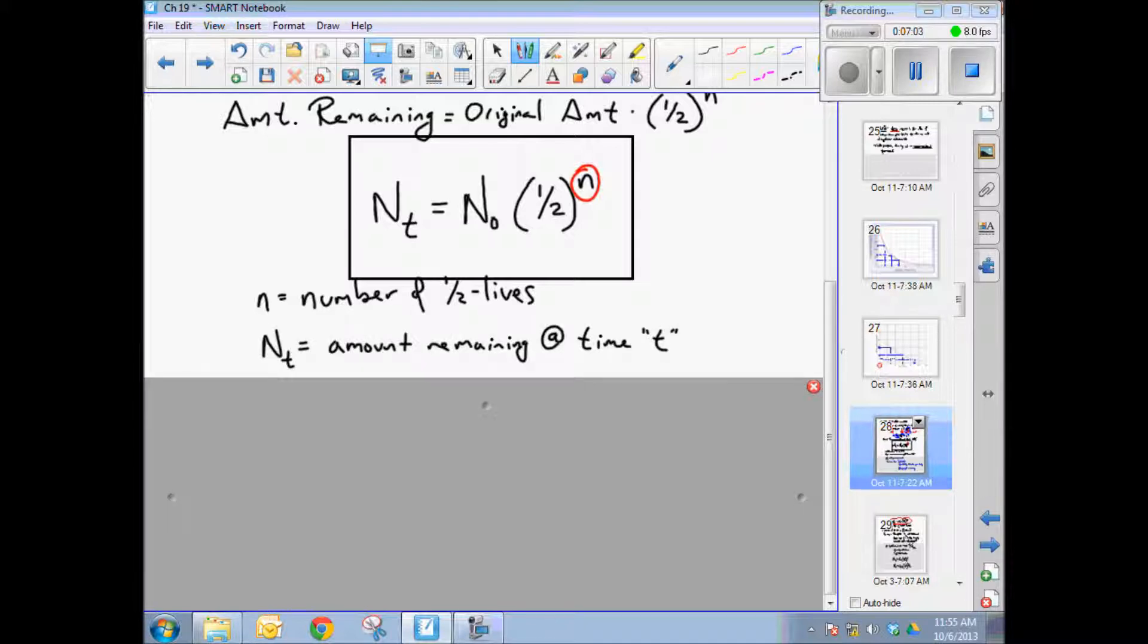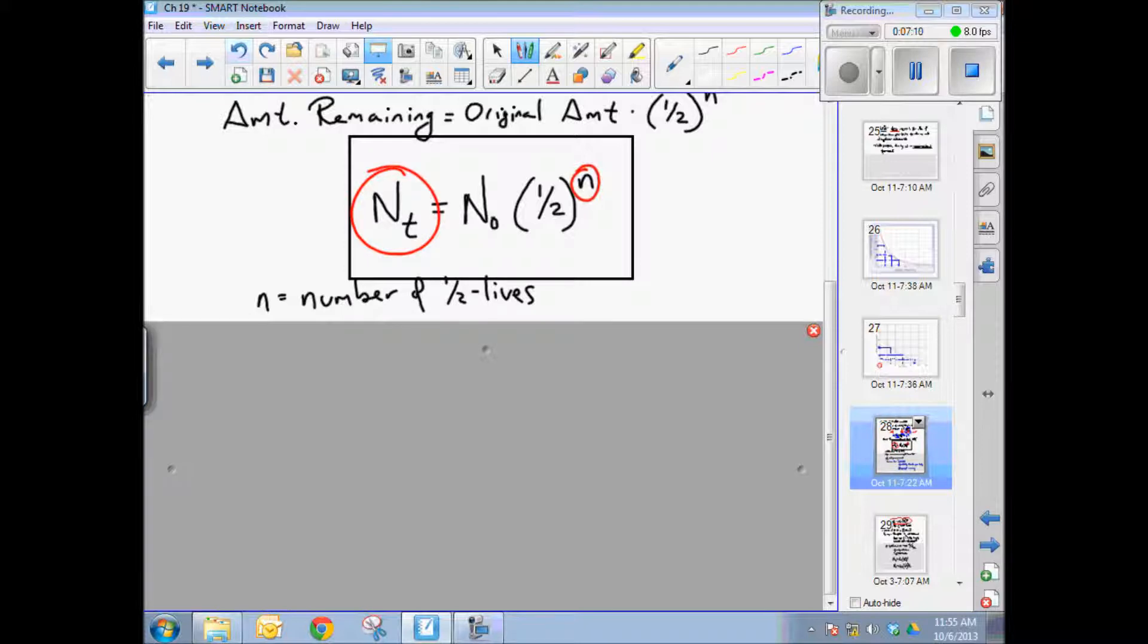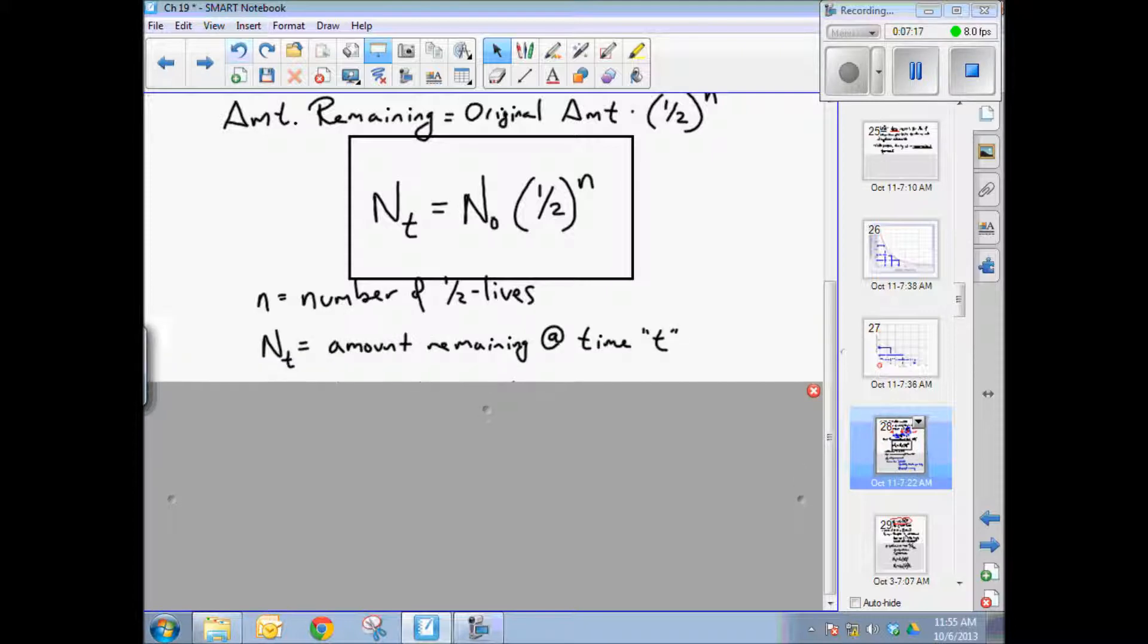N sub t is the amount remaining at time t. And this is what we're solving for in this last example. N sub t is the amount remaining at time t. That's what you're solving for. And n sub-zero is the original amount, the amount of radioactive isotope you started with.